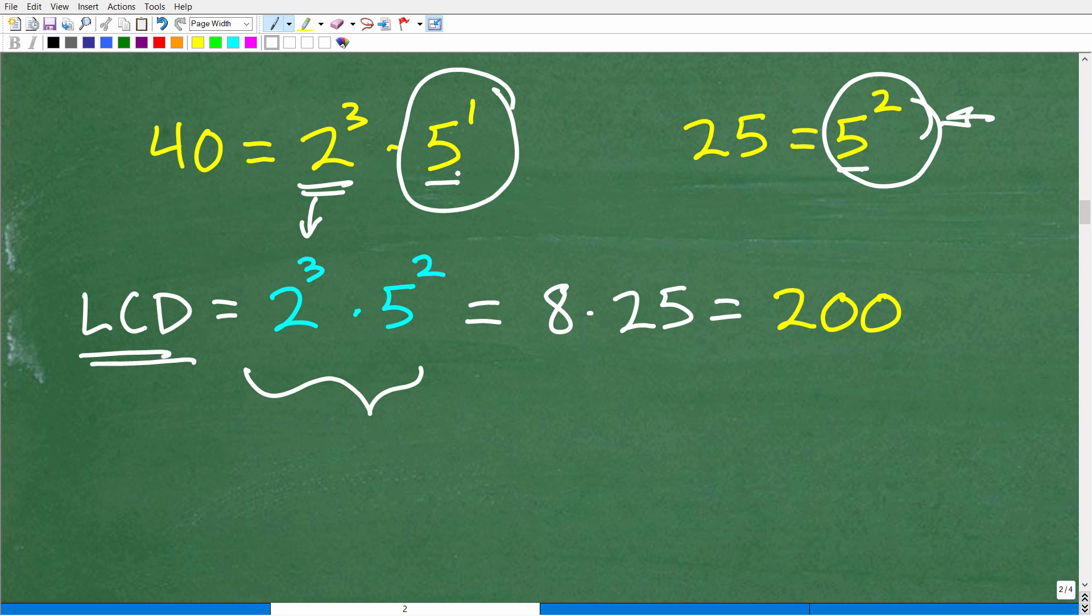Well, you always take the one with the highest power to represent in our LCD. So we don't need to write five and then another five squared. That's two, you don't want to do that. That's incorrect. What you have to do is look at the highest power of this number. So here's five to the first, this is five to the second power. So we're going to take and put the five to the second power into our LCD. All right. So now we're ready just to go ahead and calculate this out.